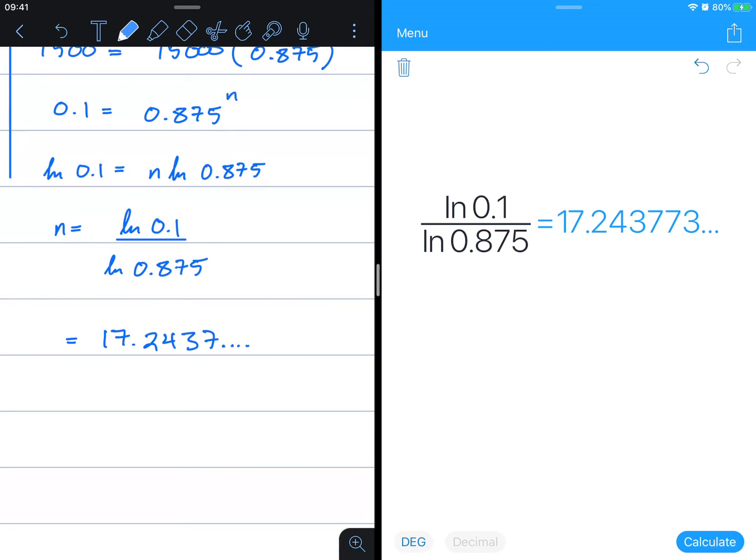But because we have to find whole value solutions for a series, we have to take the next whole number of 18 years.